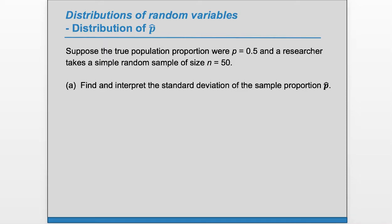Suppose the true population proportion were p equals 0.5, and a researcher takes a simple random sample of size n equals 50. Find and interpret the standard deviation of the sample proportion p hat.